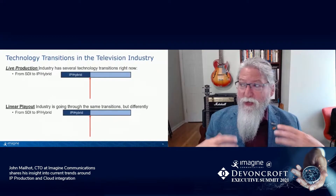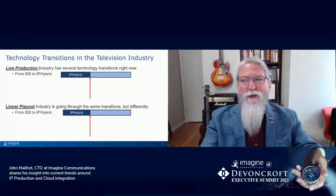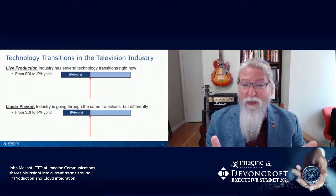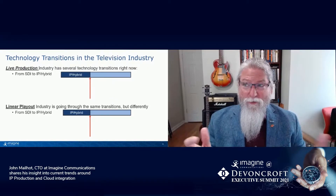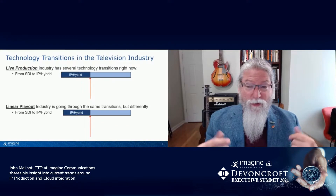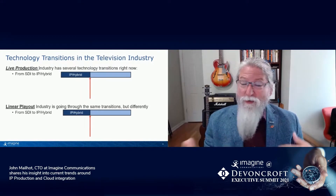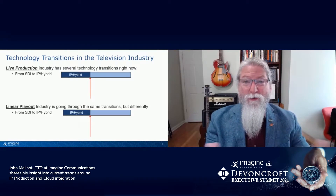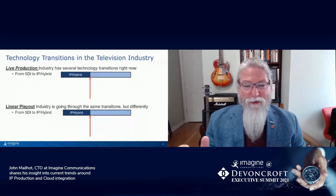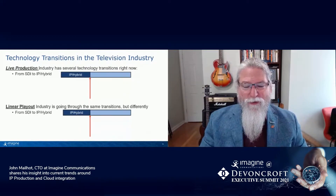The television industry is going through four simultaneous transitions. The first is the technology transition of carrying signals around the plant in IP versus SDI. In the live production industry, this was driven by scale — needing to be bigger than is convenient in an SDI router, and equally driven by the need to accommodate UHD. In the linear playout industry, a very similar need for scale drives the IP transition. You can build bigger systems with more multiviewers and more signals flying around using IP than is convenient in SDI. Both industries are along this transition for maybe slightly different driving reasons, but both relate to scale.